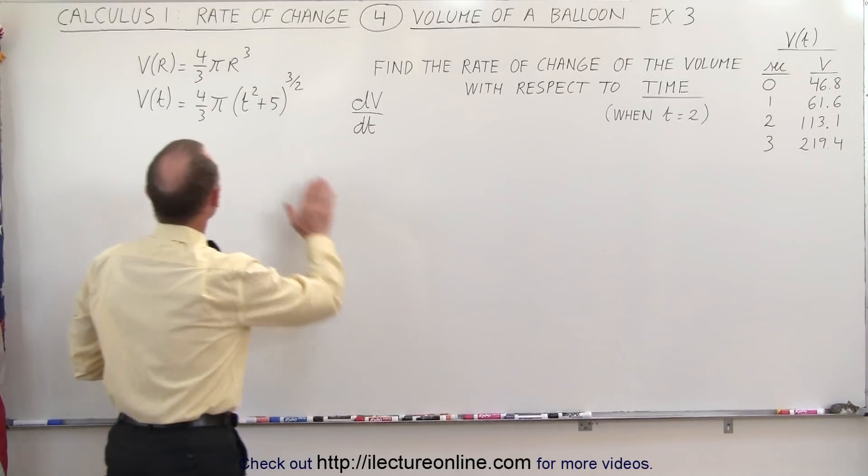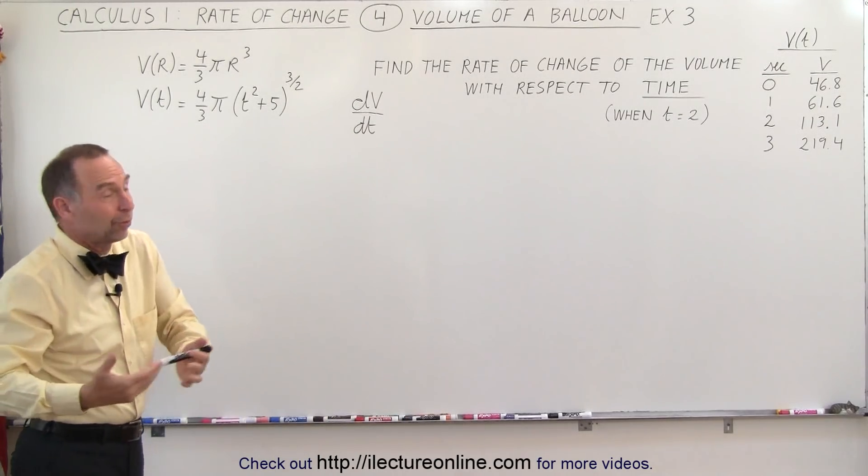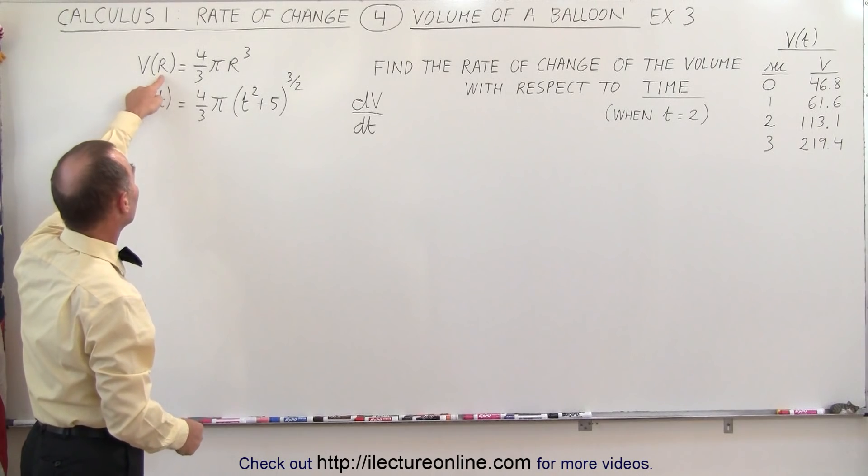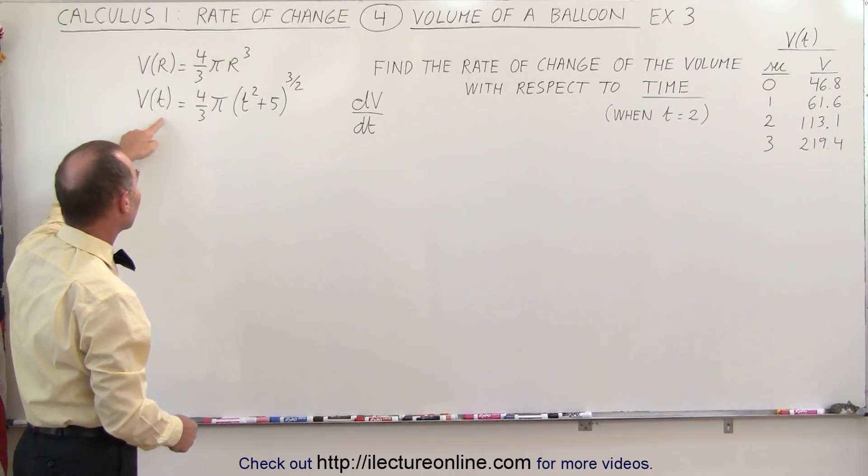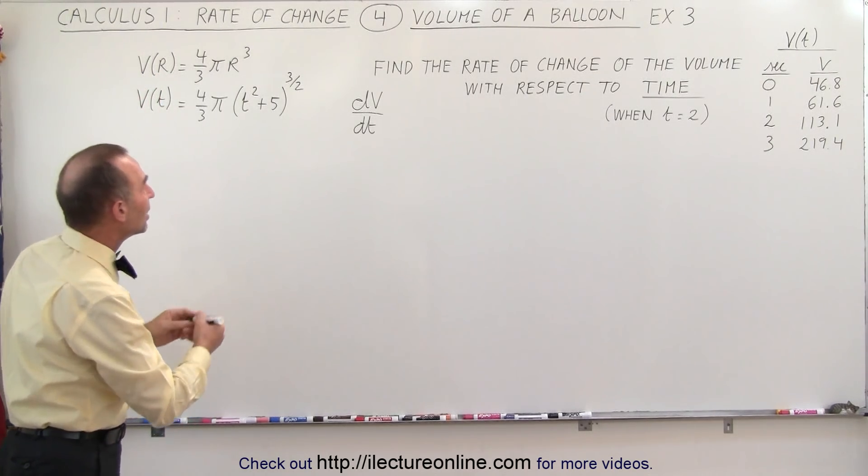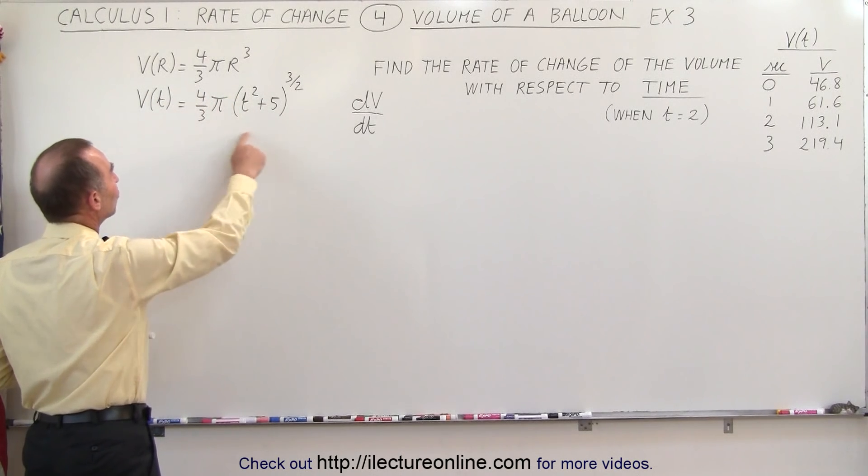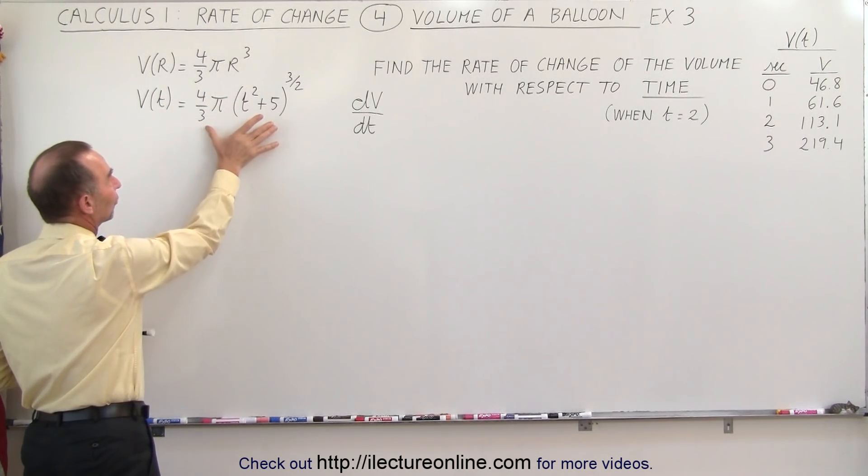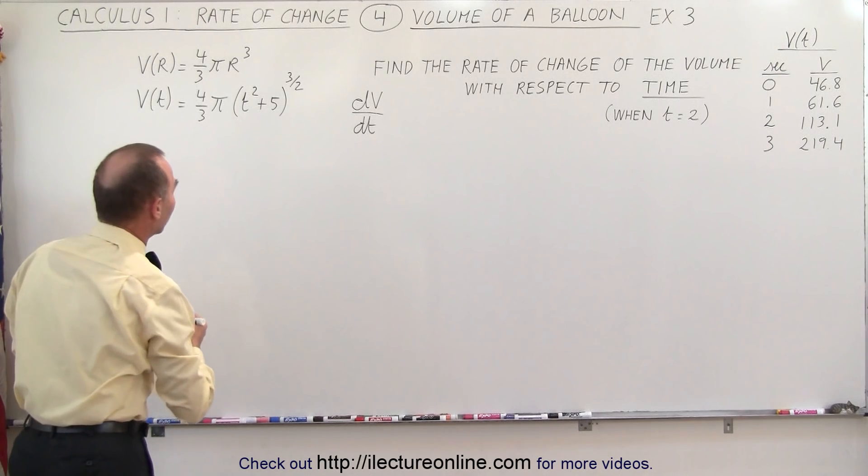Notice that if we didn't have the second equation, we wouldn't be able to do it because we only would have the volume as a function of the radius. We need the volume as a function of the time. So dv/dt would simply be the rate of change of the volume with respect to time.